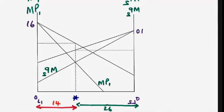Here is a visual of the graphical analysis. With 40 fisher persons, we allocate them between the two lakes to illustrate the optimal allocation.